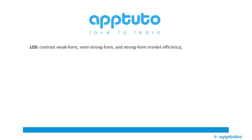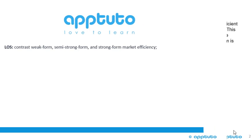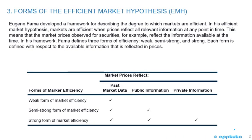This LOS covers the weak form, semi-strong form, and strong form of market efficiency.